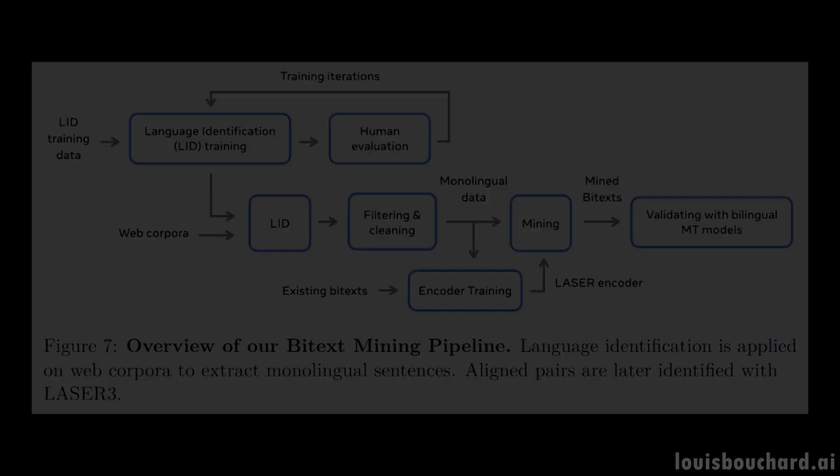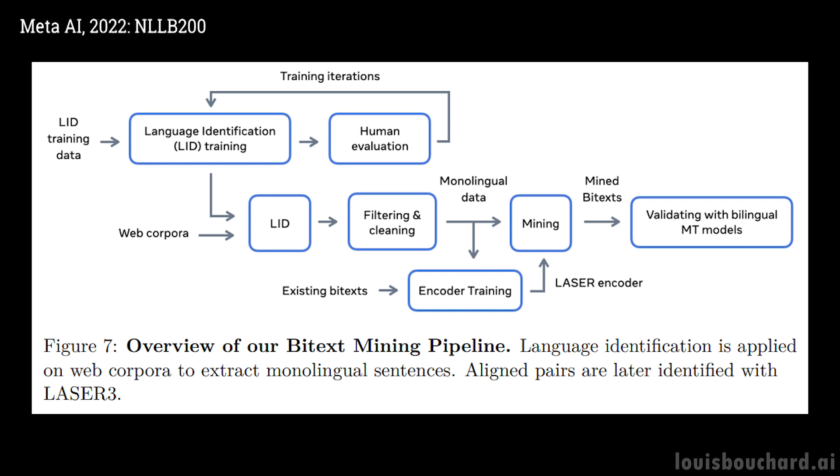First, they built an appropriate dataset. Meta created an initial model able to detect languages automatically, which they call their Language Identification System. It then uses another language model based on transformers to find sentence pairs for all the scraped data. These two models are only used to build the 200 paired language datasets we need to train the final language translation model, NLLB200.